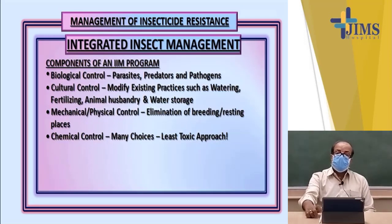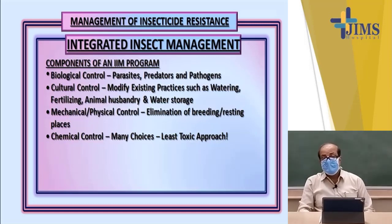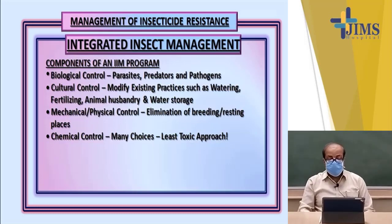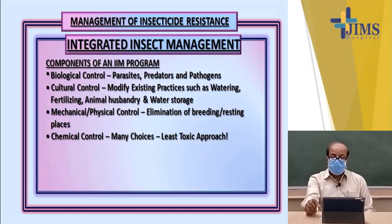Another approach to overcoming insecticide resistance is integrated insect management. Here, biological control is promoted using parasite predators and pathogens — such as gambusia fish, tadpoles, and other predators that eat mosquito larvae. There are also cultural controls, like modifying practices such as watering, fertilizing, animal husbandry, and water storage to reduce larval breeding. Mechanical and physical control involves elimination of breeding and resting places of mosquitoes. Finally, chemical insecticide control can also be used. In integrated insect management, all four techniques are used side by side for overall comprehensive control of the insect population in the community.